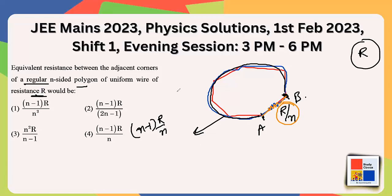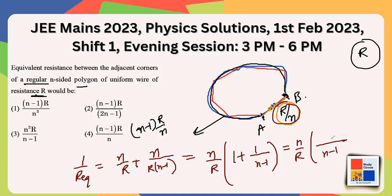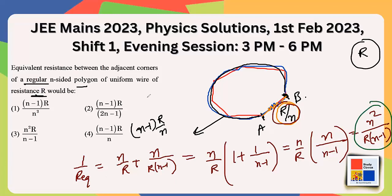Using the parallel resistance formula, 1/R_eq = n/R + n/(R(n-1)). Factoring out n/R gives 1/R_eq = (n/R)(1 + 1/(n-1)) = (n/R) × n/(n-1) = n²/(R(n-1)). Therefore, R_eq = R(n-1)/n².